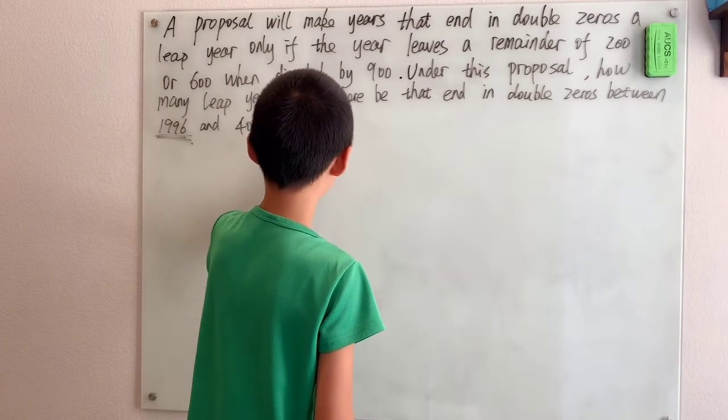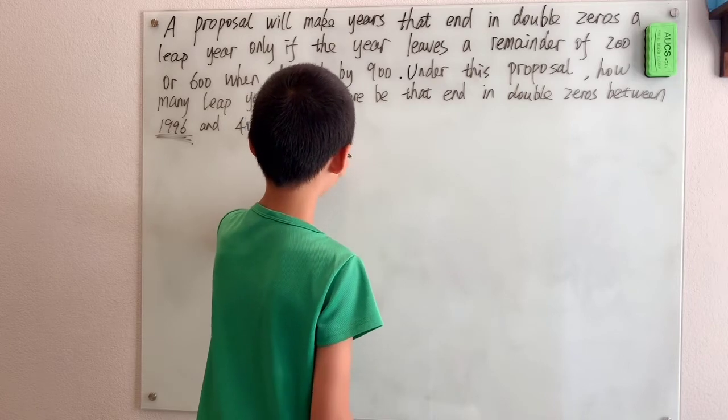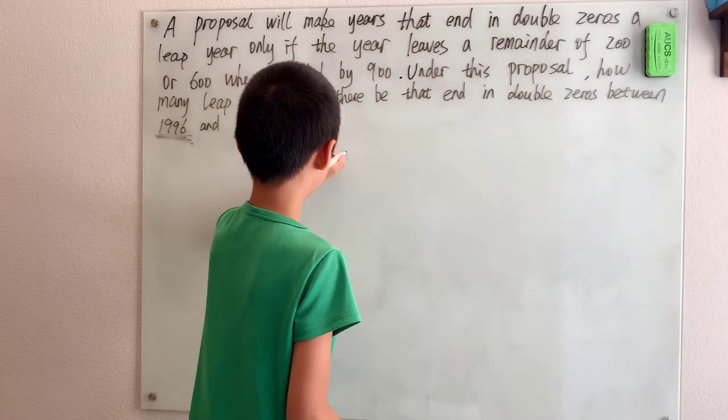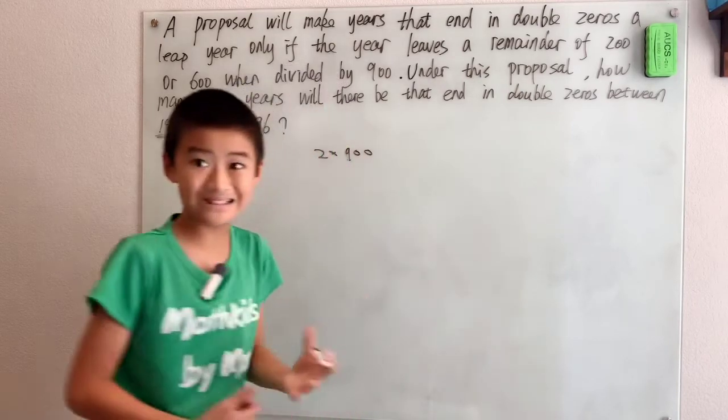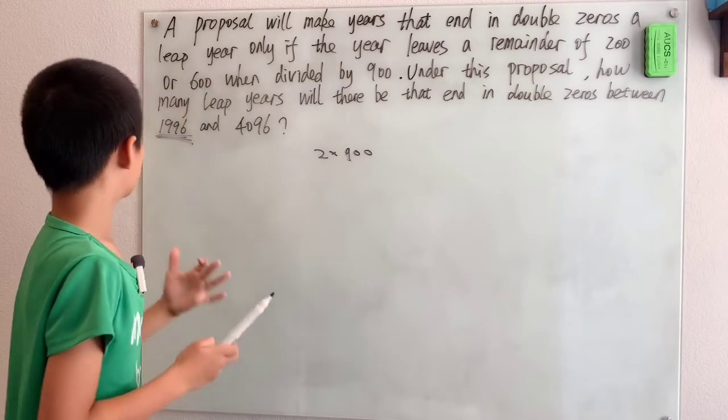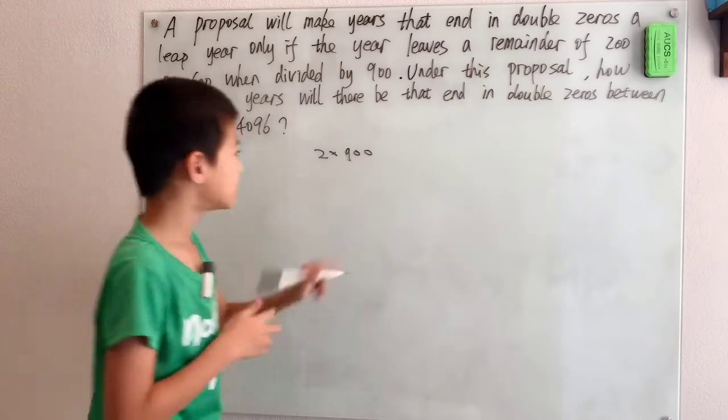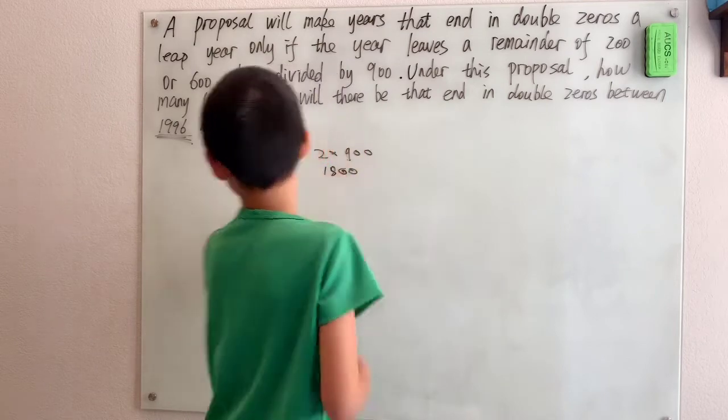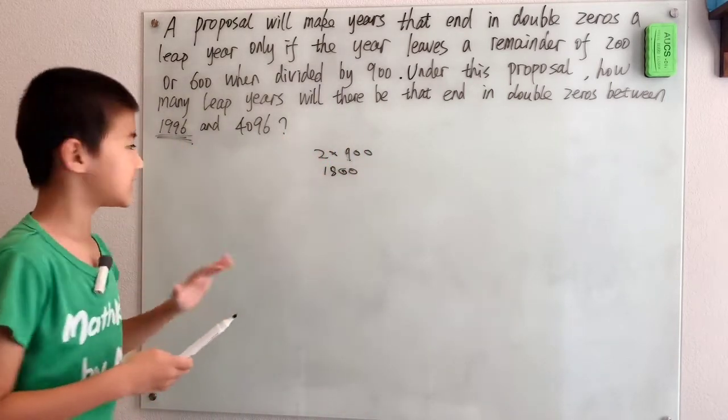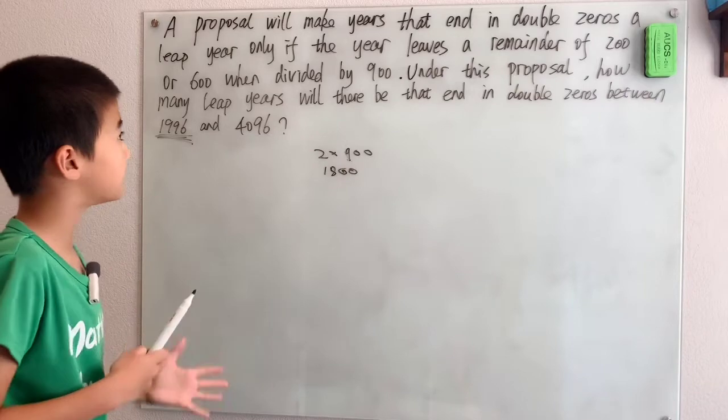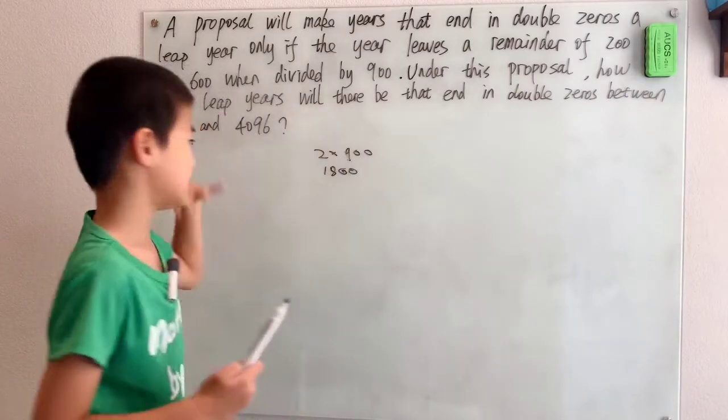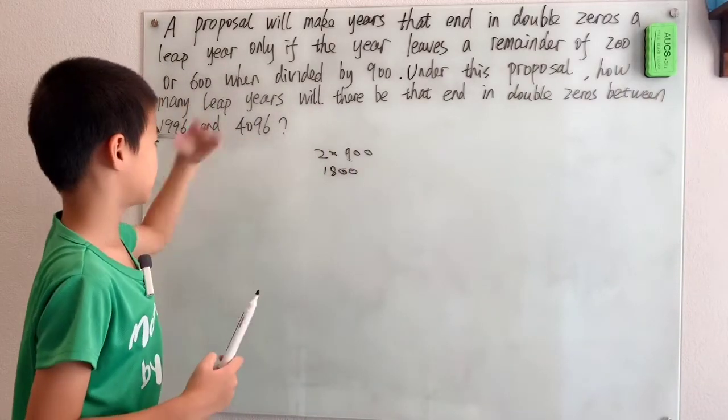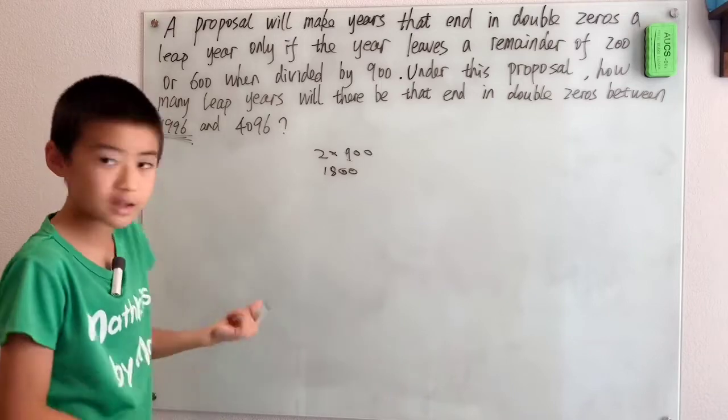The second multiple is 1800, or 2 times 900. The number itself, 1800, is less than 1996, but we can't rule out that choice because it has to be 200 or 600 greater. We're actually adding 200 or 600 to this value.